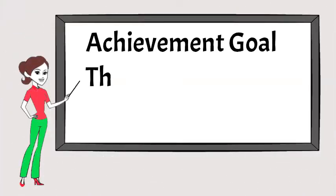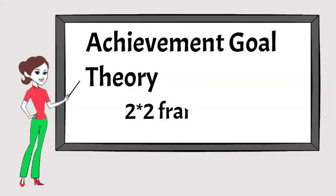Achievement goal theory is a theory of motivation which aims to explain how people approach learning situations and how they perceive the outcomes.